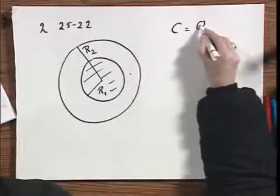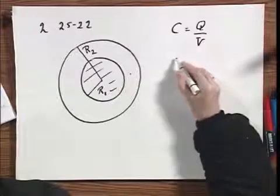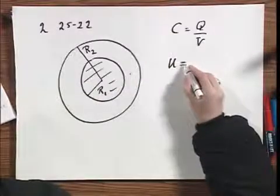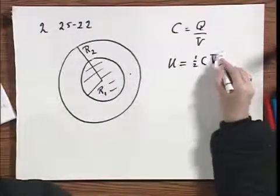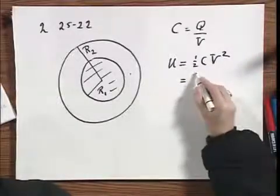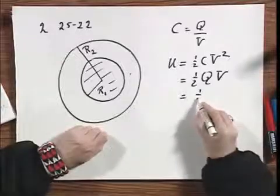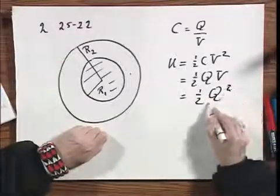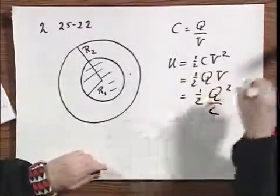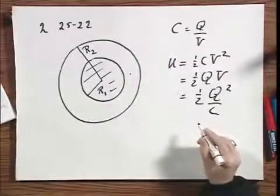Remember, C is Q divided by V. I will also write down the total energy of the system equals 1 half C V squared. It's also 1 half Q V, and it is also 1 half Q squared over C. This is all the same, and you can apply any one of these three as it suits you.